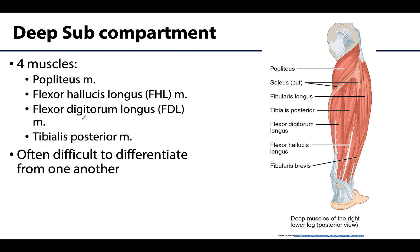The four muscles include the popliteus, which is located in the inferior knee region near the popliteal fossa and plays a small role in that boundary. The flexor hallucis longus tends to be the largest muscle in this compartment and is headed towards the first digit or big toe. The flexor digitorum longus has four long tendons heading to digits two through five. Lastly, the tibialis posterior is the deepest muscle in this compartment, located between the two longer muscles.